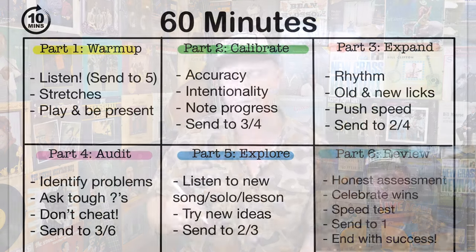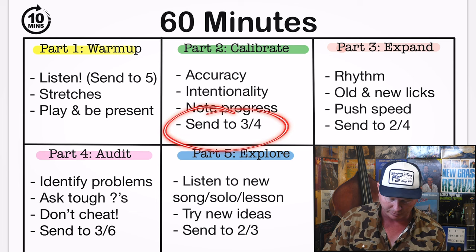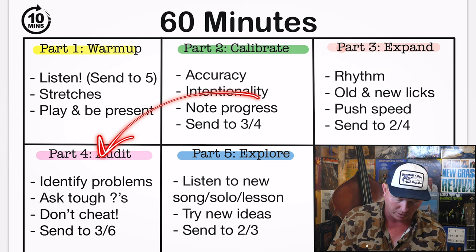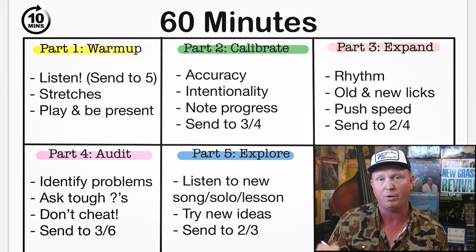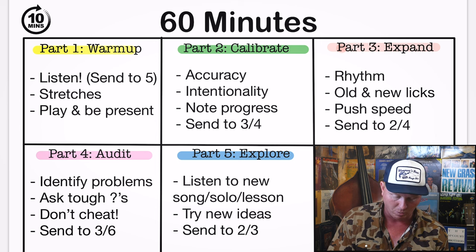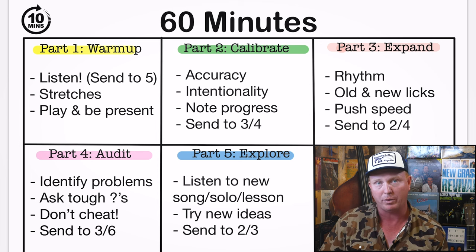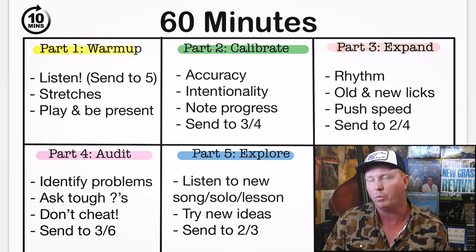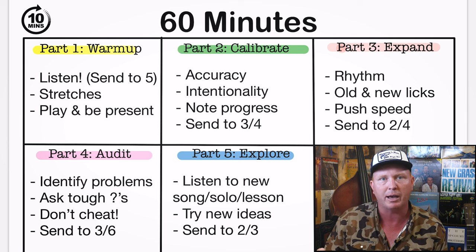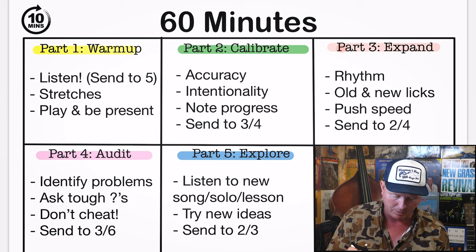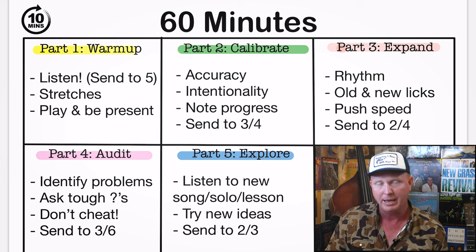When you work your way through material in the calibrate section, you can send those over to part three, which is the expansion segment, or over to the audit — which, believe it or not, is going to be an even deeper dive than what we're doing in part two. That will give us material to fill our time. As you work your way through this, you'll have more and more new material to put into part two. The first time you do part two, just play some scales and things like that. This part two will get filled up as you pile day upon day of practice. And with that, let's move on to part three, which is expansion, and part four, which is audit.